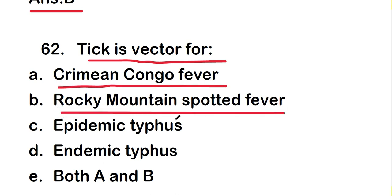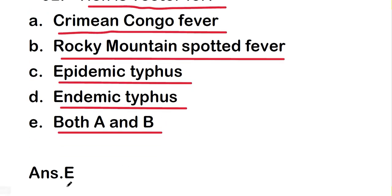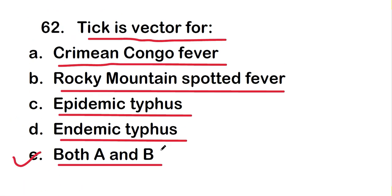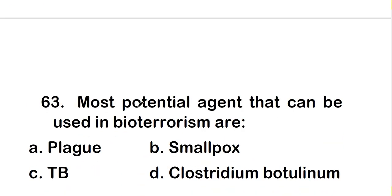The next question is: tick is a vector for Crimean-Congo fever, Rocky Mountain spotted fever, epidemic typhus, endemic typhus, or both A and B? The right answer is option E, that is both A and B. Tick is a vector for Crimean-Congo fever and Rocky Mountain spotted fever.